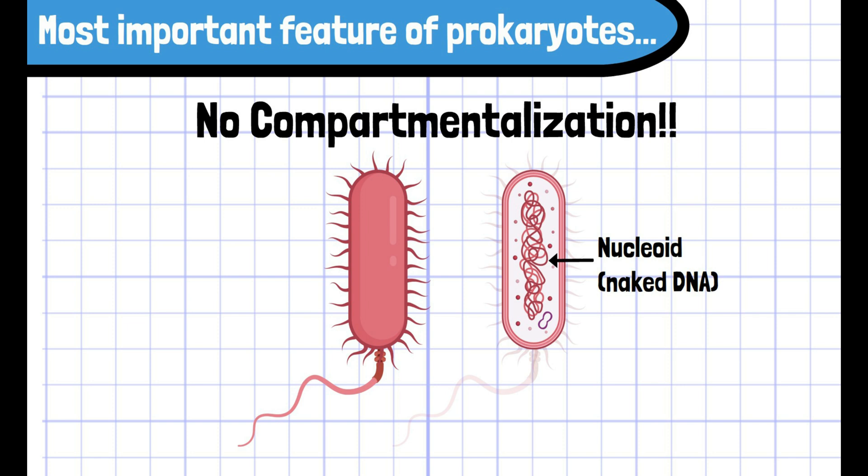However, in contrast to eukaryotes, they have smaller circular DNA fragments called plasmids near the nucleoid. Although the genes on the plasmids are not necessary to maintain their lives, they enhance the survival of an organism.